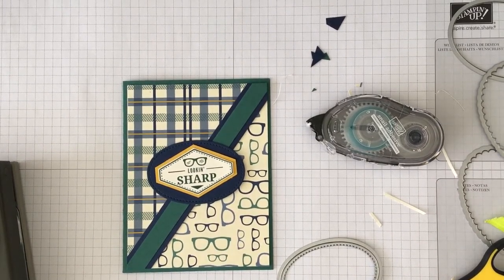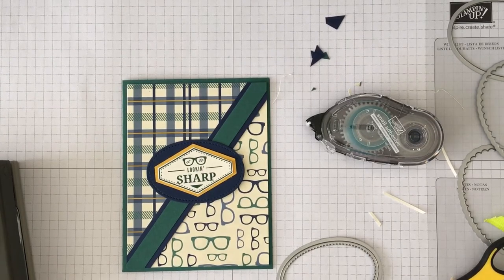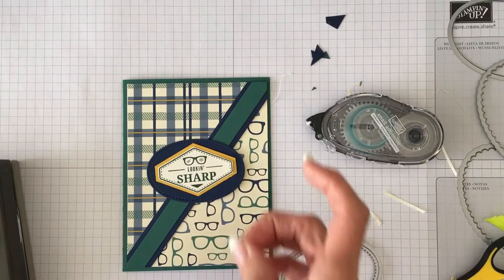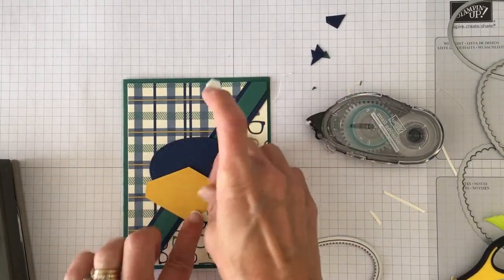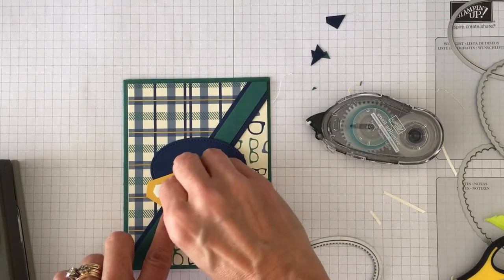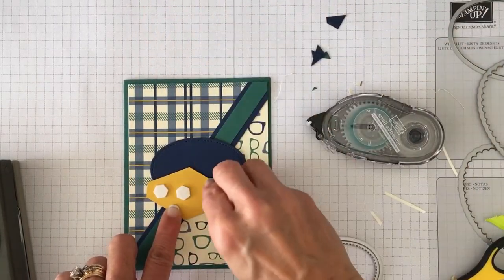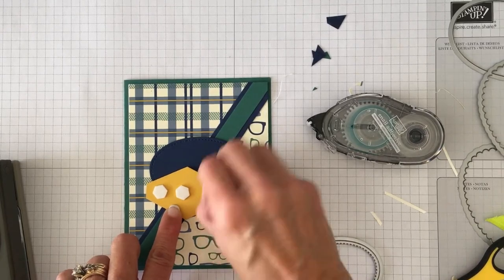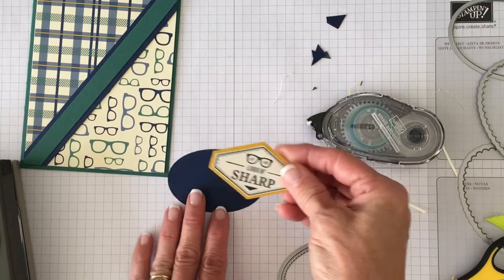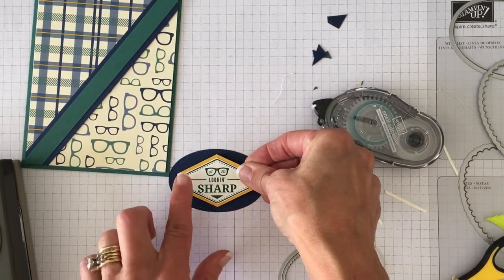Then I took some dimensionals and then I lost the dimensionals somewhere on my desk. Where are they? Oh there they are under the stamp set. So what I did is I took some of these dimensionals, they're my favorite thing in the world. So I put some dimensionals on the back of my tag. This truly tailored tag punch you'll be carrying over with some fun new stuff.